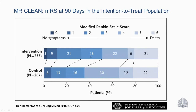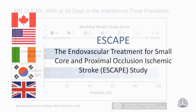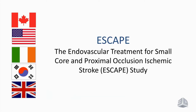Looking at the modified Rankin Scale 0 to 2, patients in the interventional group had a much better outcome versus patients in the control group. The outcome was much better in the interventional group. The next study, the ESCAPE study, was mainly done in Canada and also in some other countries, and also showed a very big advantage for patients treated with endovascular treatment.